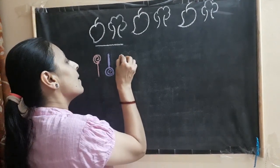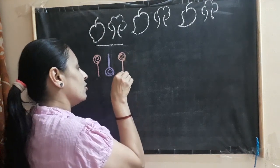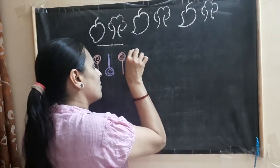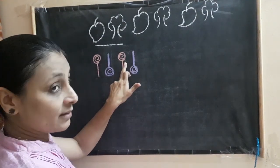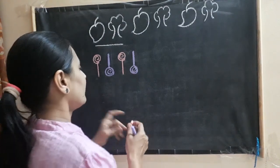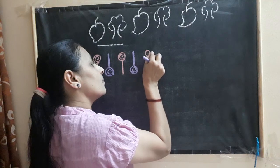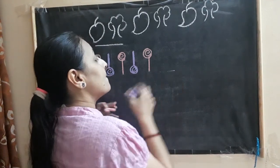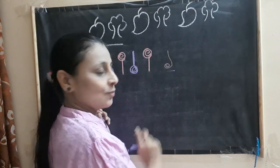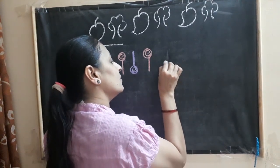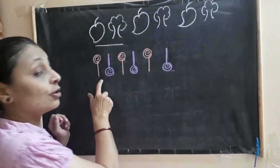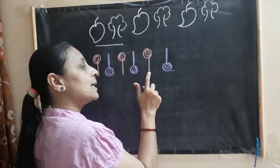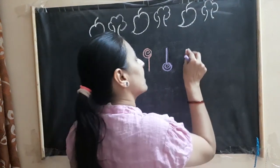Now tell me, children, what will come next? Next will be a red lollipop again. And then I'm going to draw a purple lollipop — but can I draw it like this? No, I have to draw it upside down. So once again: red lollipop, and what will come next? Purple — because the pattern is like that. So we have to follow the pattern: red, upside-down purple, red, upside-down purple, and again next will be red and upside-down purple.